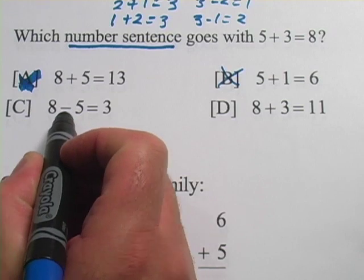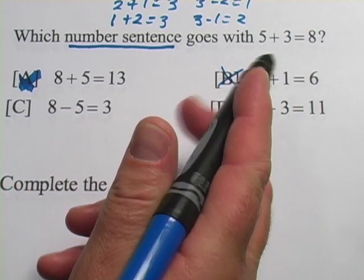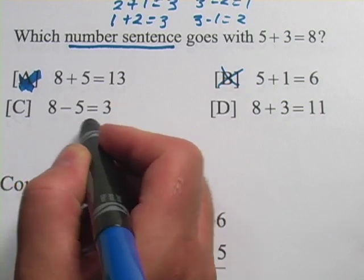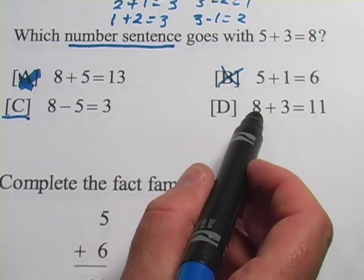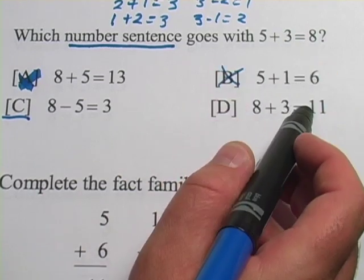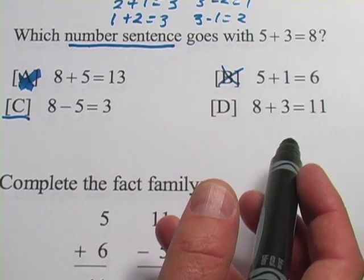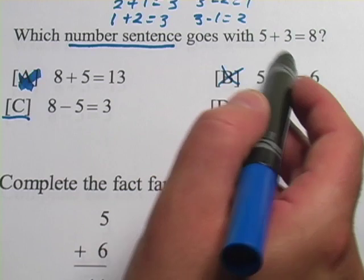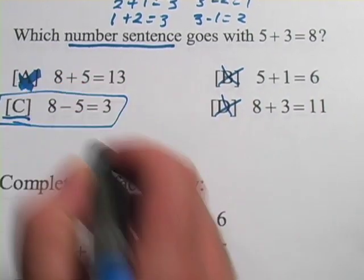The third one, we've got 8 minus 5 equals 3. And like our first one, it uses just 3, 5, and 8. It is correct, 8 minus 5 is 3. So that looks like our answer. Let's just check D here. We've got 8 plus 3 equals 11. Well no, 11 wasn't in our original. So even though all these other number sentences are correct in the sense that the math is right, they don't go with this fact family. So C is going to be our answer on this one.